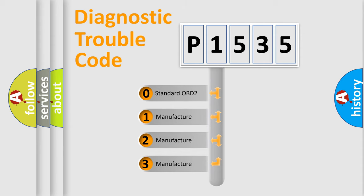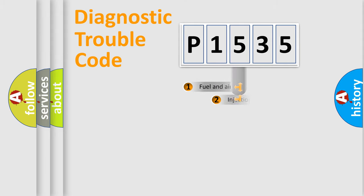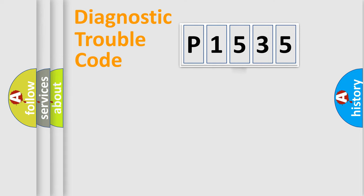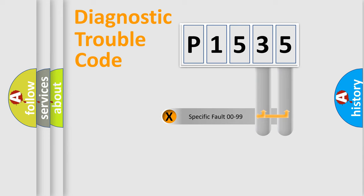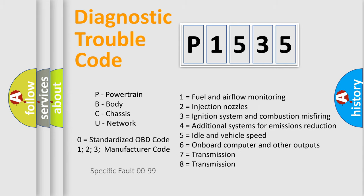If the second character is expressed as zero, it is a standardized error. In the case of numbers 1, 2, or 3, it is a more specific expression of a car-specific error. The third character specifies a subset of errors. The distribution shown is valid only for the standardized DTC code. Only the last two characters define the specific fault of the group, and such a division is valid only if the second character code is expressed by the number zero.